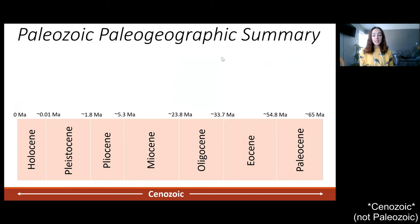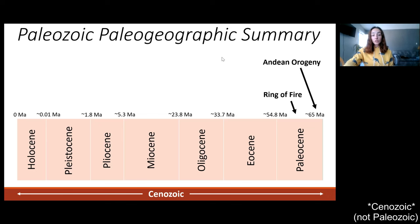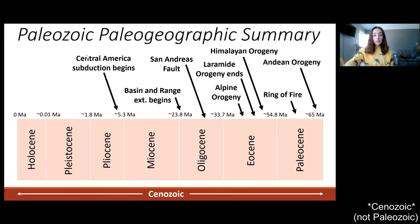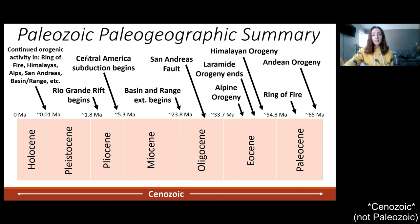Now to give a brief summary of the geologic events we just discussed, let's put them all along the timeline of the Cenozoic Era. The Cenozoic Era has epochs — Paleocene, Eocene, Oligocene, Miocene, Pliocene, Pleistocene, and Holocene — going from 65 million years ago at the end of the Mesozoic to now at the end of the Holocene. Going from right to left: the Andean orogeny beginning in the earliest Paleocene; the Ring of Fire also beginning to form around this time due to subduction zones such as the Andean; the Himalayan orogeny beginning in the Eocene; the Laramide orogeny ending in the Eocene; the Alpine orogeny beginning also in the Eocene; the San Andreas Fault forming due to the end of Laramide subduction and beginning of shear stress; the beginning of the Basin and Range extension; the beginning of Central America subduction; the beginning of the Rio Grande Rift Zone. The Ring of Fire, the Himalayas, the Alps, the San Andreas, and the Basin and Range continue in their orogenic activity today.